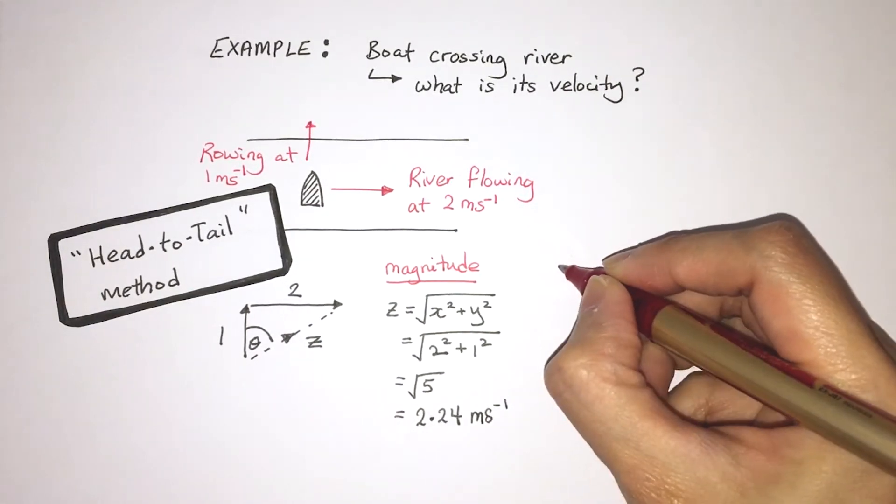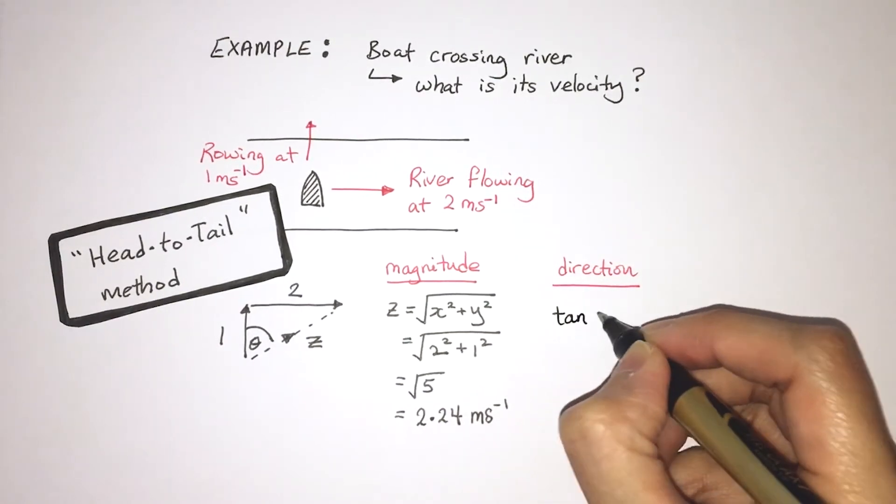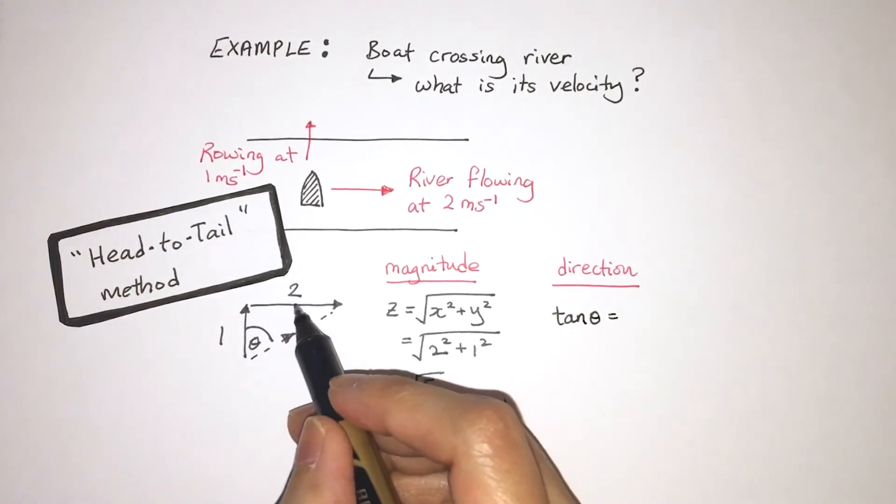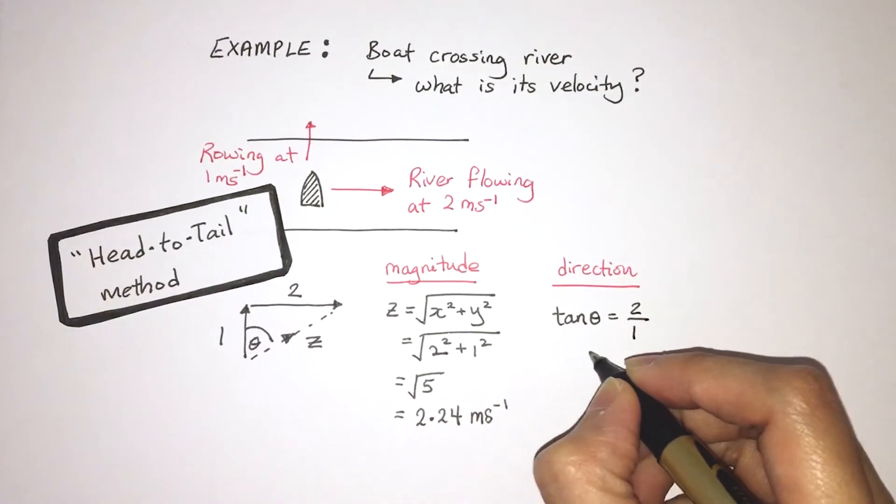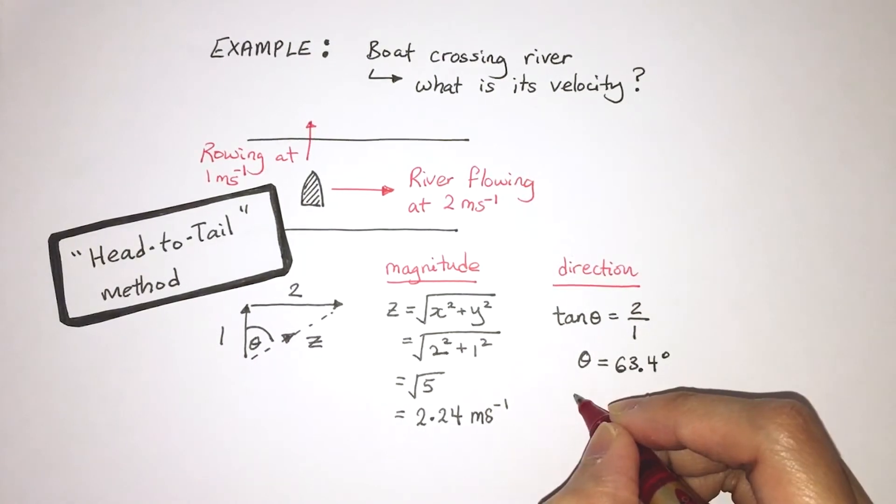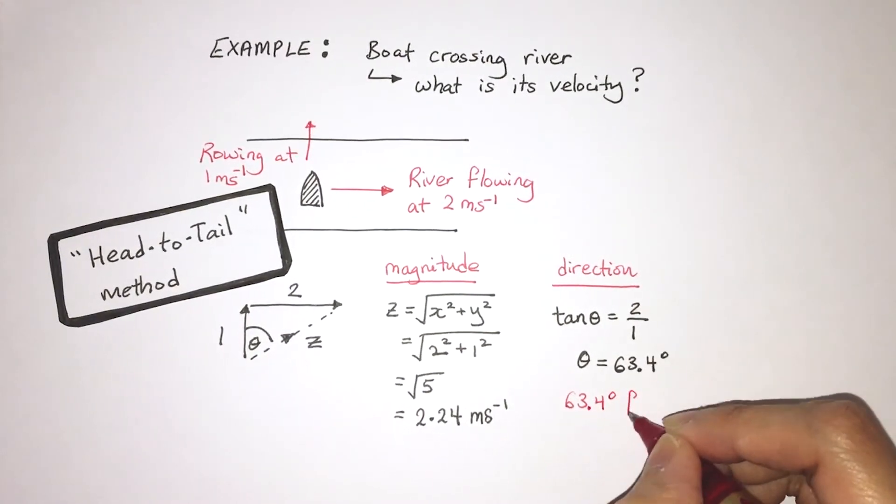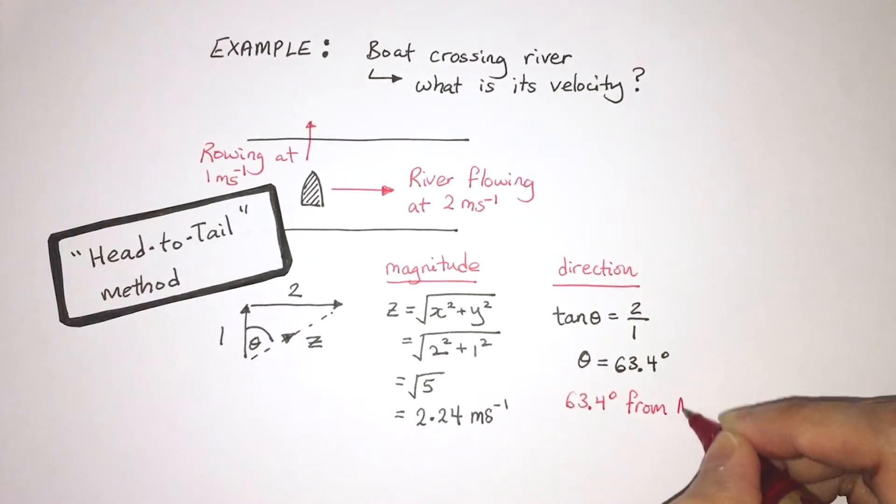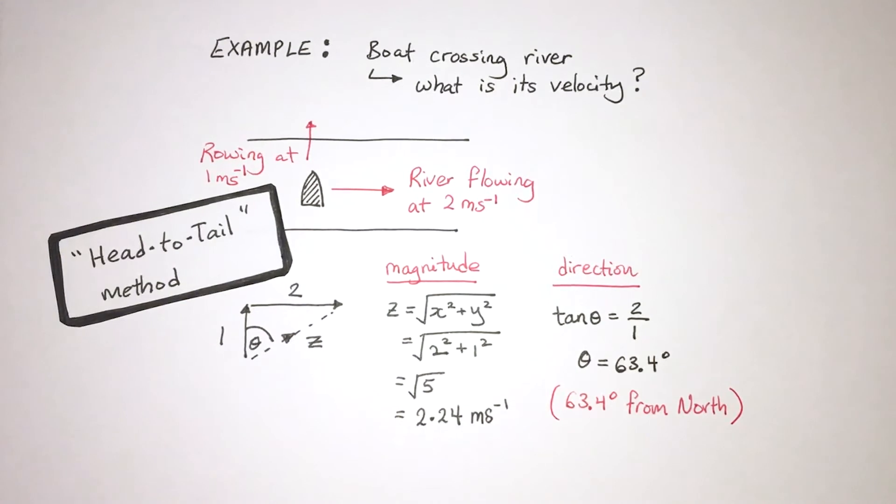And to find the direction, I do tan theta is equal to the opposite over adjacent. And here it's 2 divided by 1. That gives me an angle of 63.4 degrees. In other words, the boat is going to travel at 2.24 meters per second at an angle of 63.4 degrees from the north if I take the vertical direction as the north.